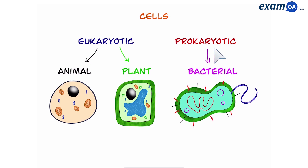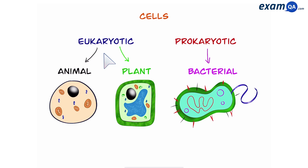One difference is that animal and plant cells have a nucleus, which is that black sphere-looking object. Bacterial cells do not have this, so that's the main difference between the word eukaryotic, which means 'with a nucleus,' and prokaryotic, which means 'without a nucleus.'